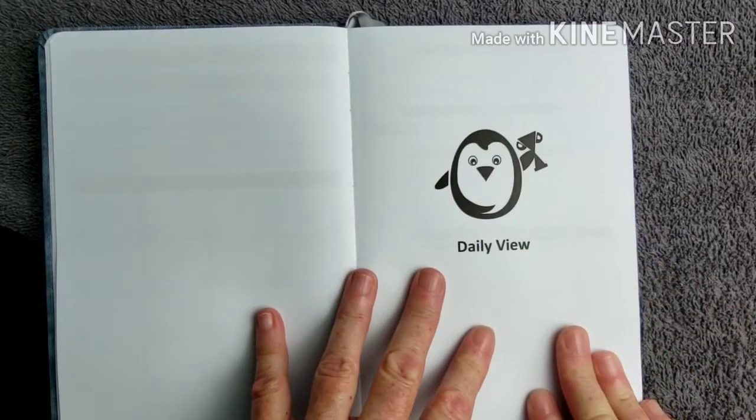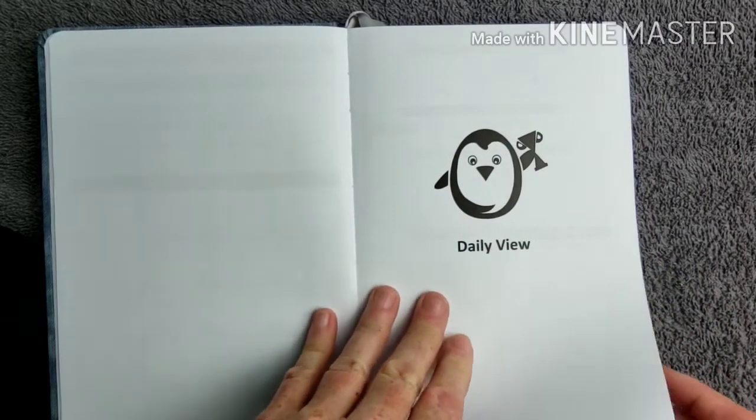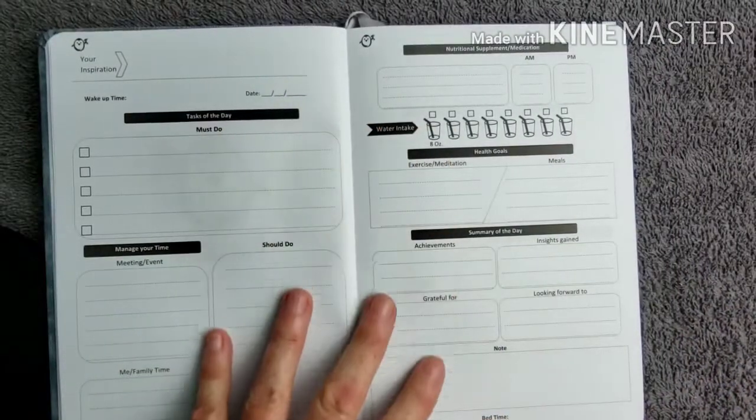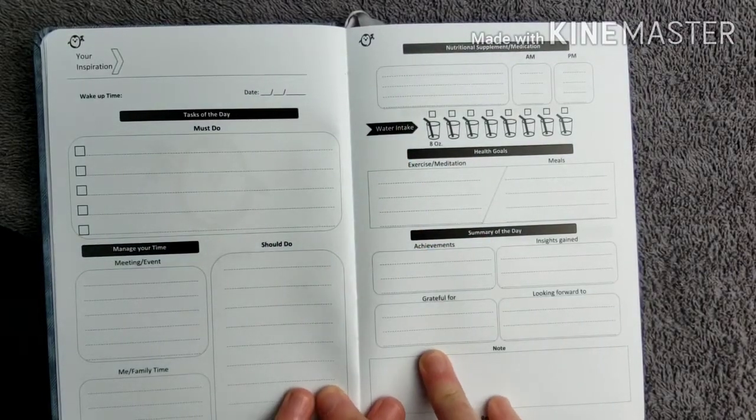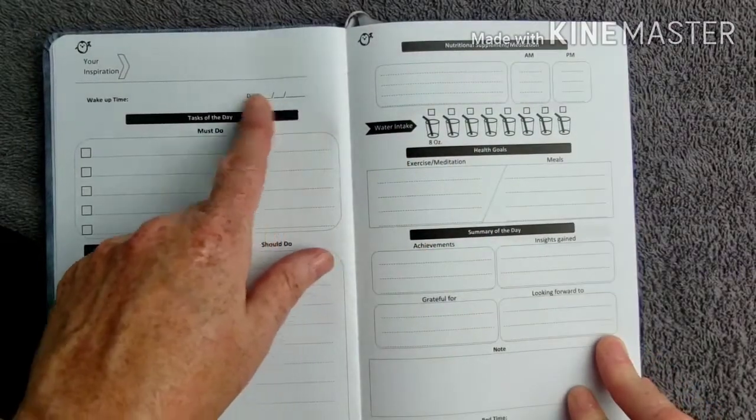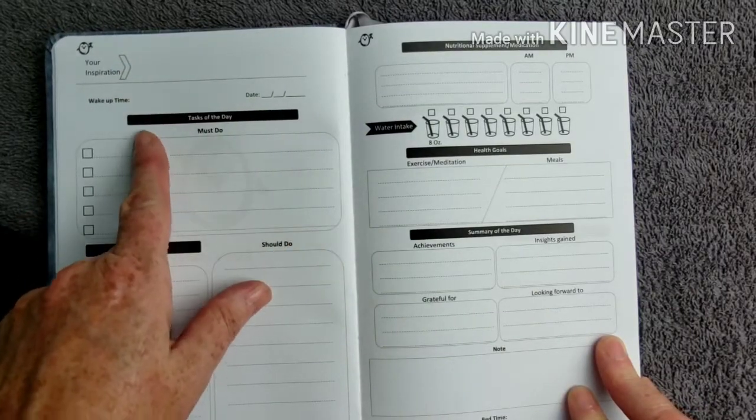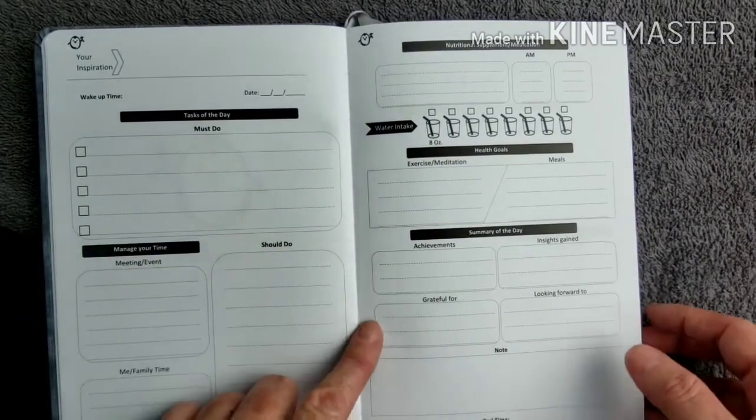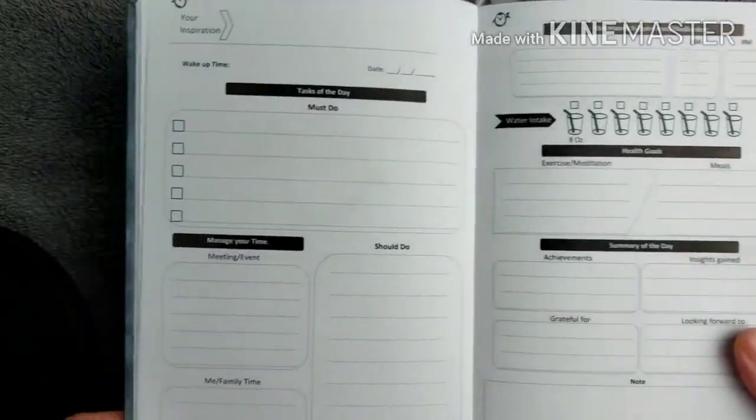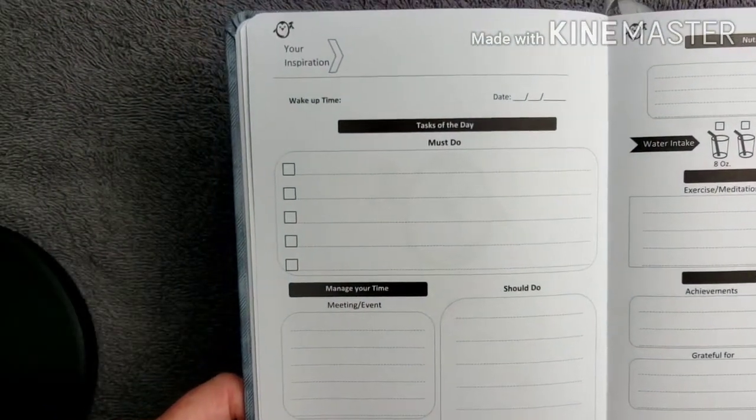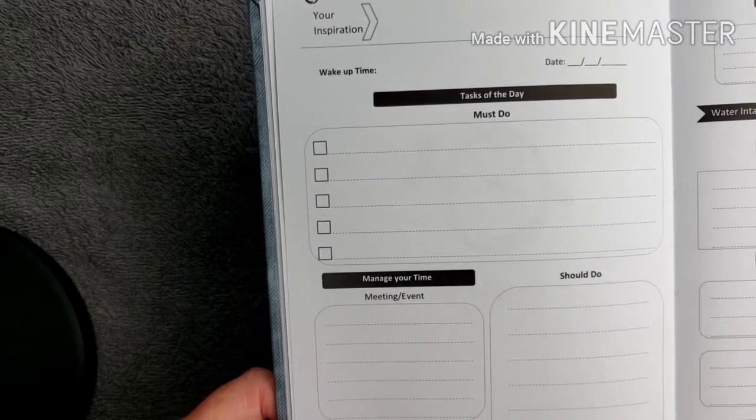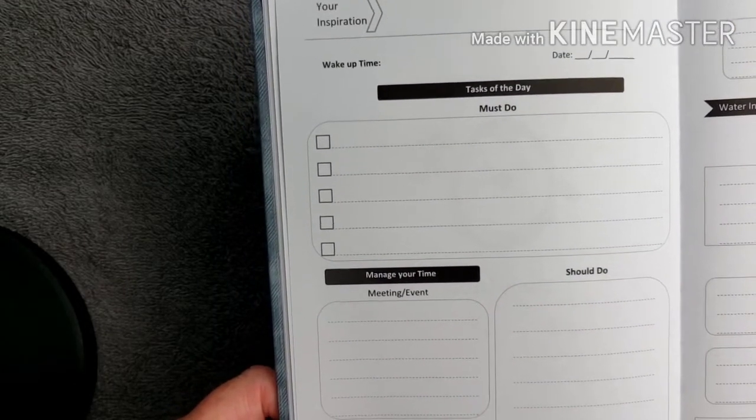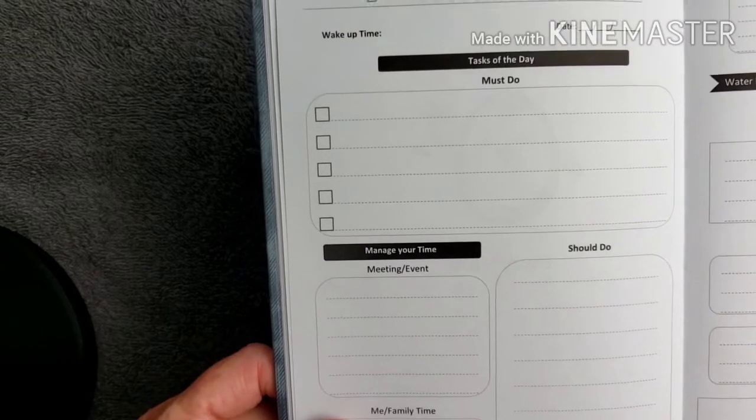So right after the six months, you go to the daily view. So each day is a two page spread. You write the date in here, your inspiration, your wake up time. Must do tasks of the day. So it has five places for that, which I like. Some planners just have three must do tasks. And I like the idea of having five.